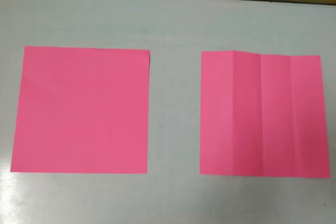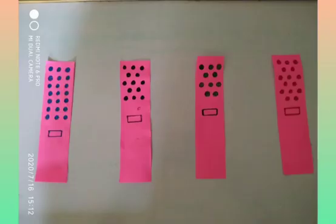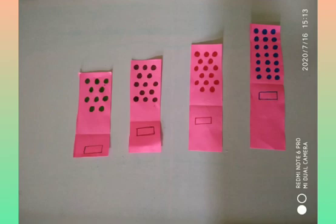The craft papers are folded and cut into four equal parts each. In each part, bindis can be stuck or dots can be drawn as shown and space for writing the numbers to be provided.